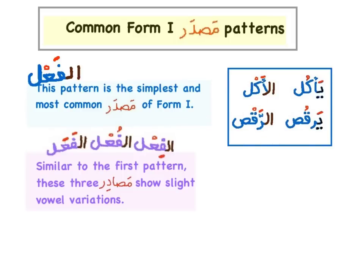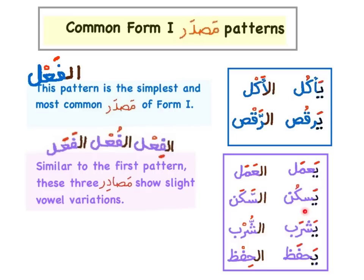Other common patterns are Al-Fa'l variants that show slight vowel variations: namely the Kasra-Sukun, Dhamma-Sukun, and Fatha-Fatha patterns. Examples: يعمل (he works) → Al-Amal (to work/working); يسكن (he lives) → Al-Sakan (to live/living); يشرب (he drinks) → Al-Shurb (to drink/drinking); يحفظ (he memorizes) → Al-Hifz (to memorize/memorizing). Notice the vowel change for each Mazdar depending on its pattern.